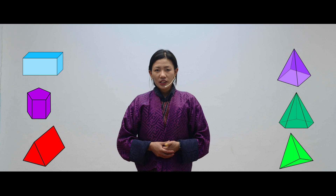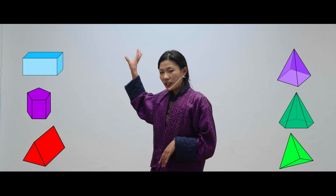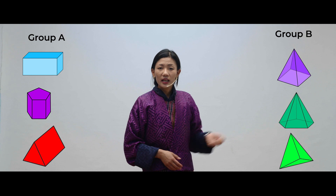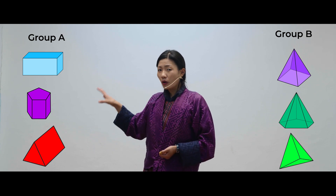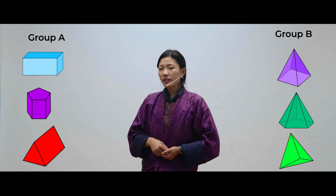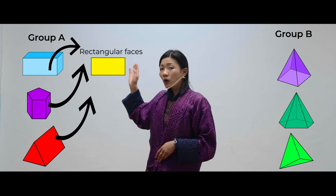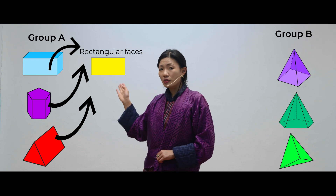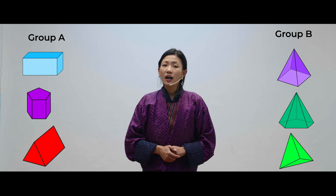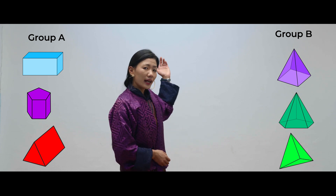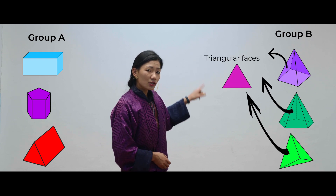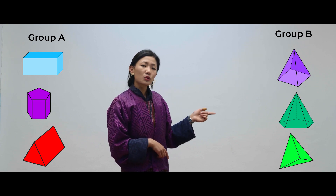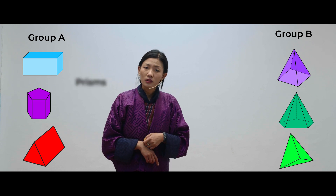Now, before we explore more 3D shapes, I want you to look at these two groups of 3D shapes. Here we have group A and here we have group B. In group A, all the 3D shapes have one thing in common — they all have rectangular faces. The 3D shapes with rectangular faces are called prisms. Now, look at group B. All these shapes have triangular faces, and the 3D shapes with triangular faces are called pyramids.